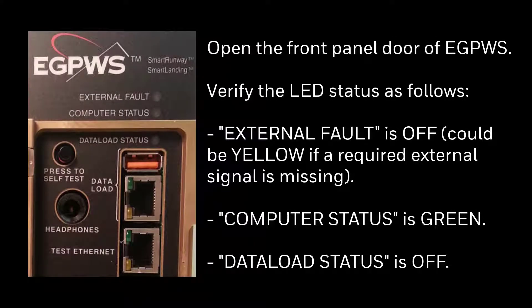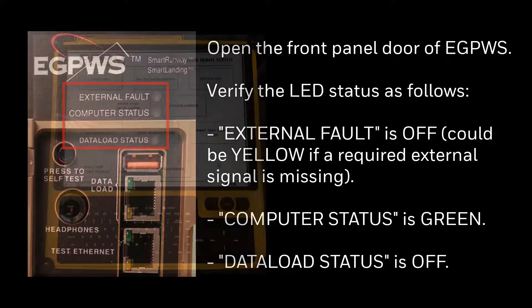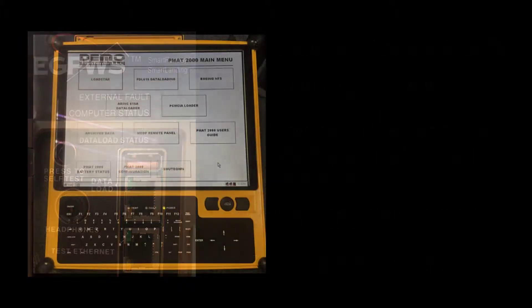Open the front panel door of the EGPWS and verify the LED status as follows: the external fault LED is off — it could be yellow if a required external signal is missing, but that won't impact data loading. The computer status LED is green. The data load status LED is off.